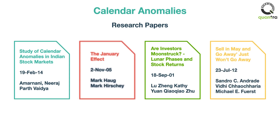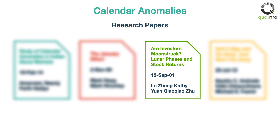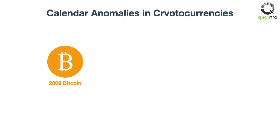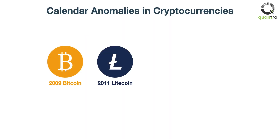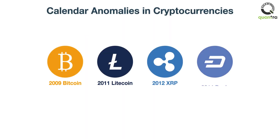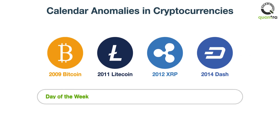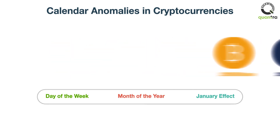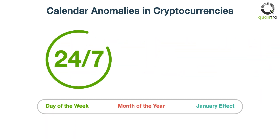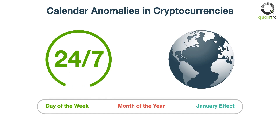However, many of them have slowly disappeared. As cryptocurrency is relatively new compared to the traditional asset classes, there is a high probability that these calendar anomalies still exist in them. Moreover, the fact that cryptocurrencies are continuously and globally traded makes them even more interesting for calendar anomalies.